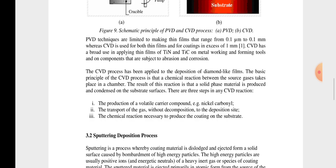With three steps - chemical reaction between the source gases takes place in a chamber. First, that is production of a volatile carrier compound, example nickel carbonyl. Then the transport of the gas without the deposition to the deposition site. Chemical reaction necessary to produce the coating on the substrate.